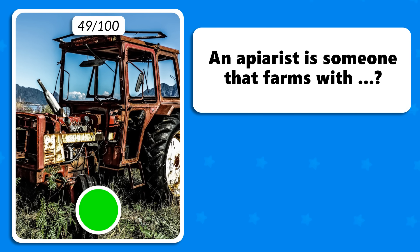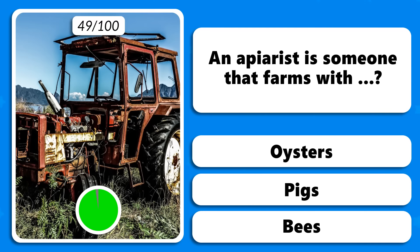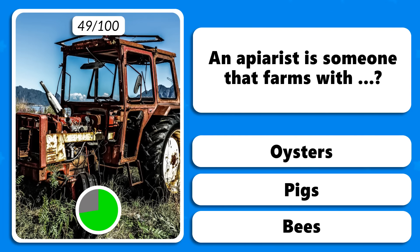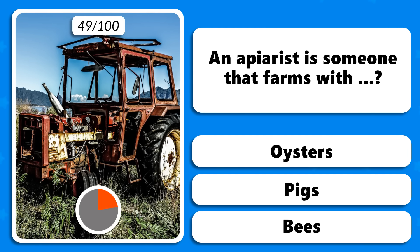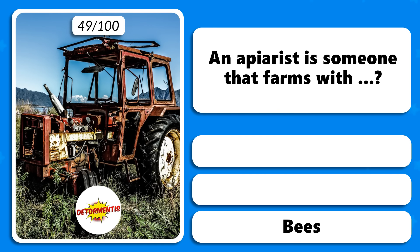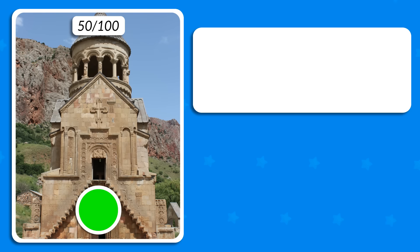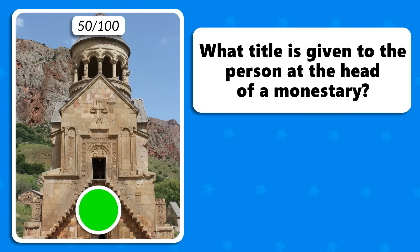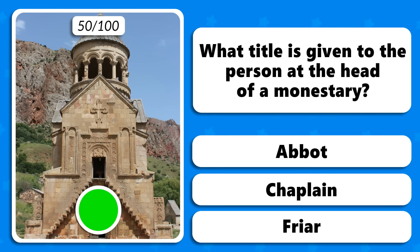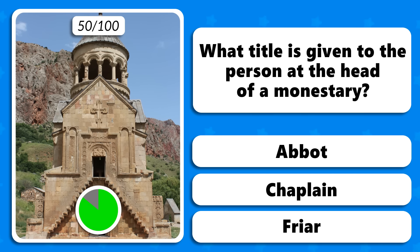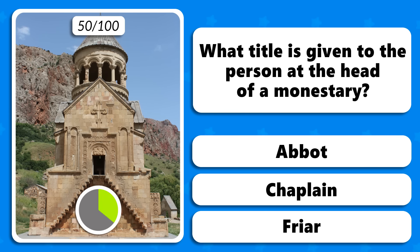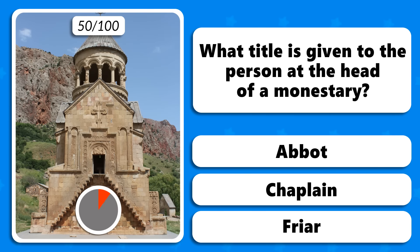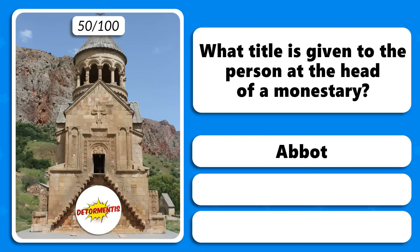An apiarist is someone that farms with oysters, pigs or bees? It is a beekeeper. What title is given to the person at the head of a monastery — an abbot, a chaplain or a frere? It is an abbot.